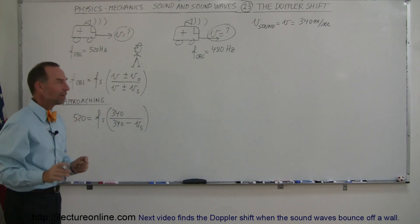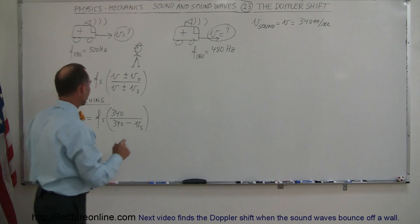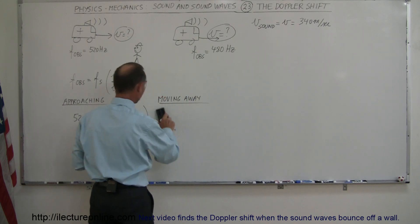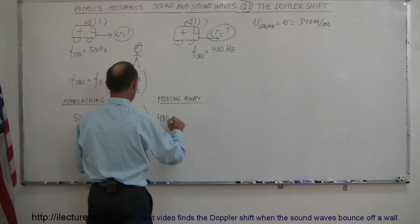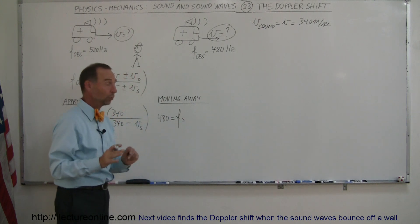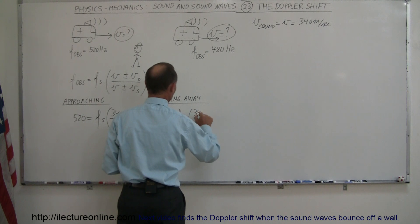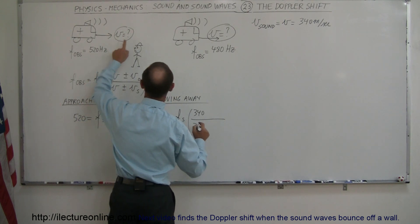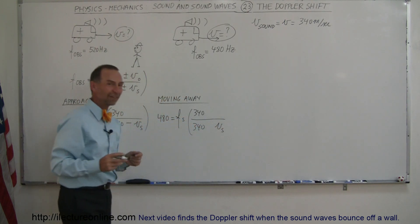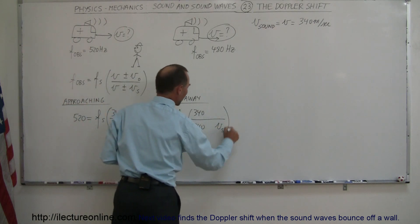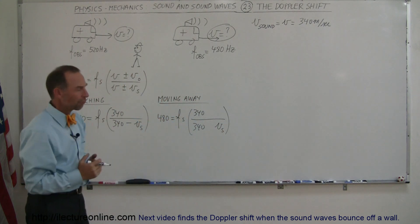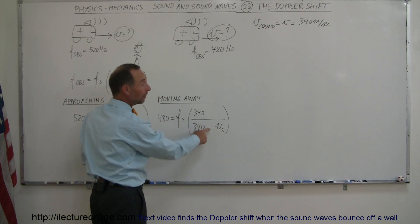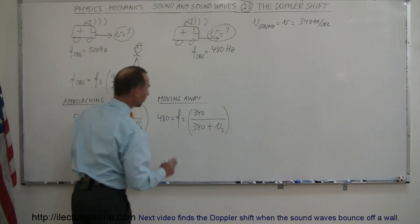Now for the van moving away from the observer: the observed frequency is 480 Hertz, equal to the frequency of the source — again unknown — times 340 plus or minus zero (observer is stationary), divided by 340 plus or minus the speed of the van. Since the van is moving away and the observer hears a lower frequency, we need a bigger denominator, so we use a plus sign.